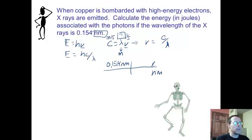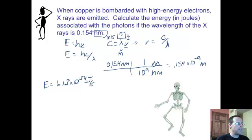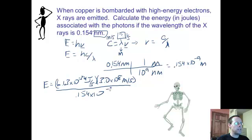The rest of it we're going to substitute over here. E equals h, which is 6.63 times 10 to the negative 34th joules per second. We're going to multiply that by speed of light, which is 3.0 times 10 to the 8th meters per second, and we're going to divide all of that by 0.154 times 10 to the negative 9th meters.